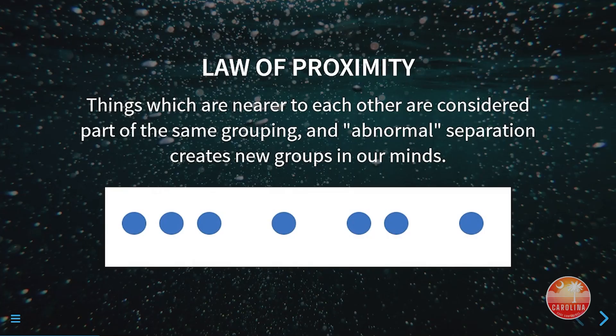The law of proximity is something that we take advantage of a lot in visualization. The idea is things that are near to each other spatially we assume are similar; things that are far apart from one another we assume are different. We're able to say obviously these three dots are very different from that dot, despite the fact that I copied and pasted them myself.